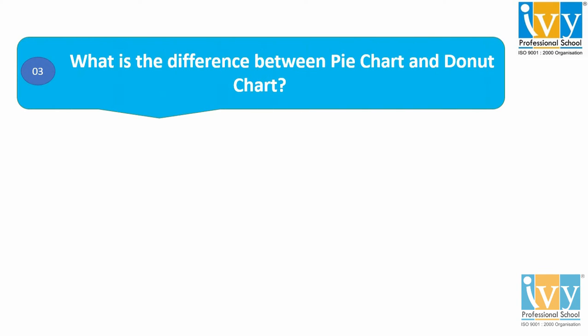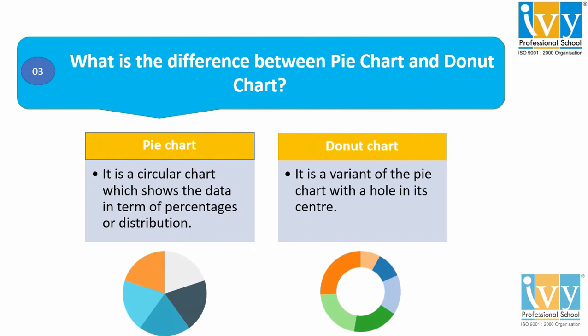Coming to question number three: what is the difference between a pie chart and a donut chart? A pie chart is a circular chart that shows individual categories as slices or percentages of the whole. A donut chart is a variant of the pie chart with a hole in its center, and it displays categories as arcs rather than slices.